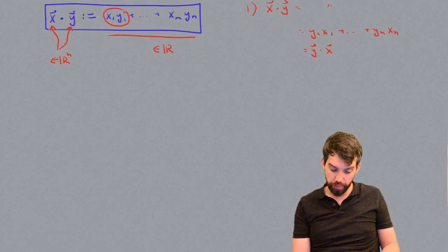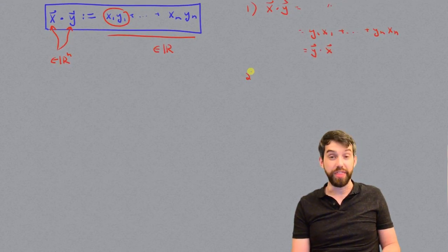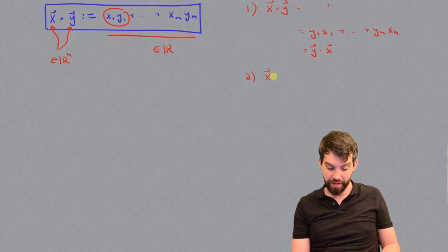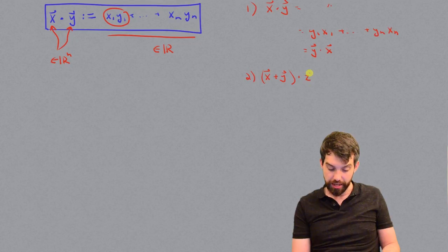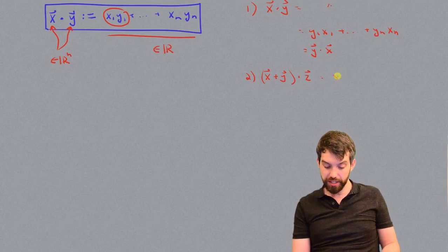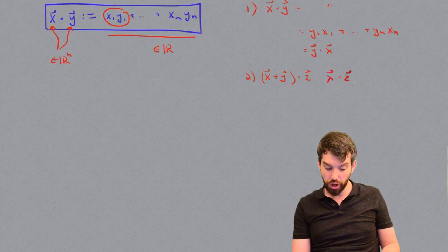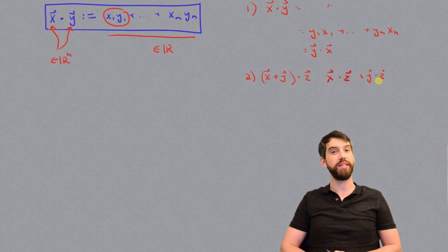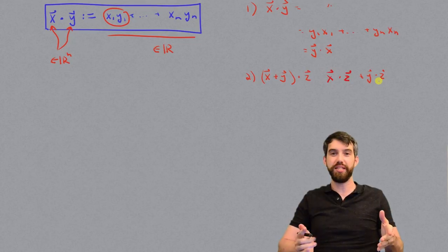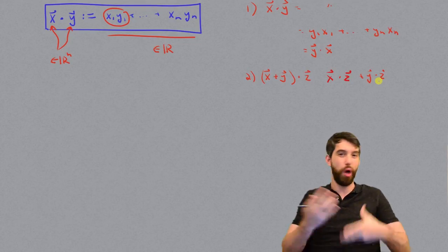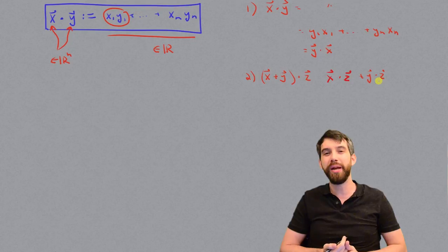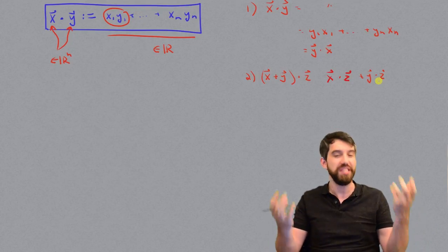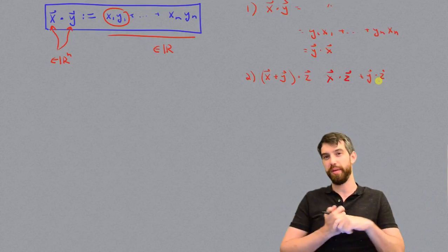The dot product also plays nicely with vector addition. For example, if I have vector x and I add to it vector y, and then take the dot product with vector z, then this is just going to be the same as x dot z plus y dot z. I'll let you pause and do out the algebra of expanding this definition to verify this is the case. The point is that this algebraic operation obeys a lot of nice algebraic rules that allow you to manipulate it basically the exact same way that you do with numbers, even though it isn't just the multiplication of numbers.